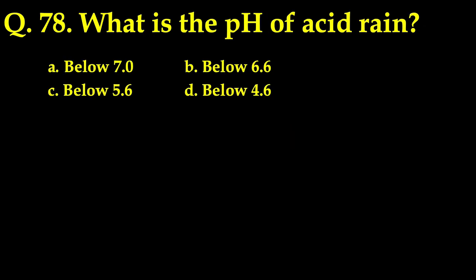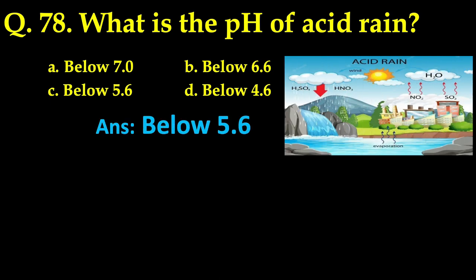The next question: what is the pH of acid rain? Out of the four options, the correct answer is below 5.6.